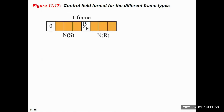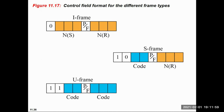Now we will see the control field format for different frame types. In the I-frame, the first bit is 0, as shown in the first figure. In the S-frame, the first two bits of the control field are 1 and 0, as shown in the second figure. For the U-frame, the first two bits of the control field are 1 and 1, as shown in the third figure.